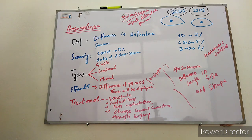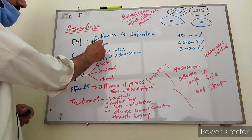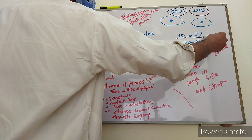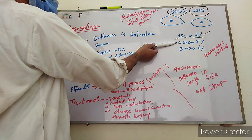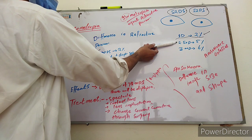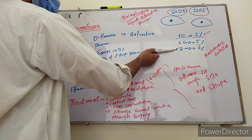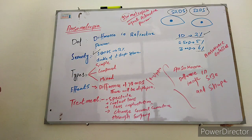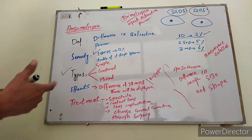Opposite to this, anisometropia — if there is a difference in the refractive power of the two eyes, this is called anisometropia. Regarding severity: if there is a difference of one diopter sphere, there will be a two percent difference in image size. If the difference is 2.5 diopter spheres, the image size difference will be five percent. If there is a three diopter difference, the image size difference will be six percent. This is the severity of anisometropia.